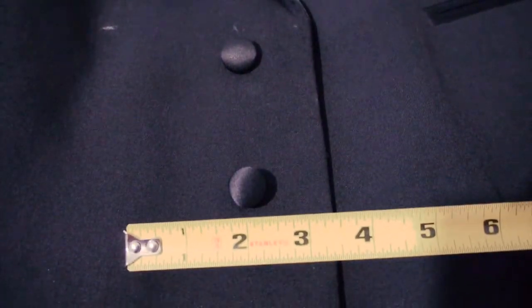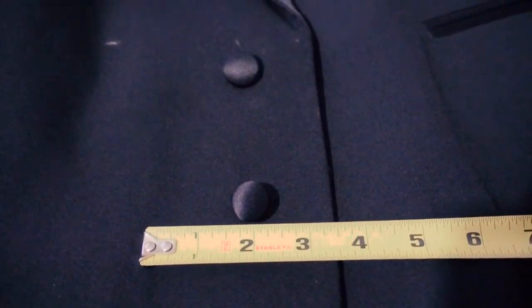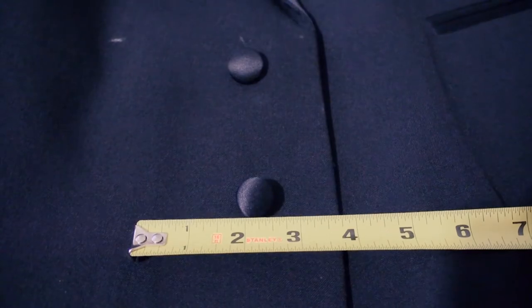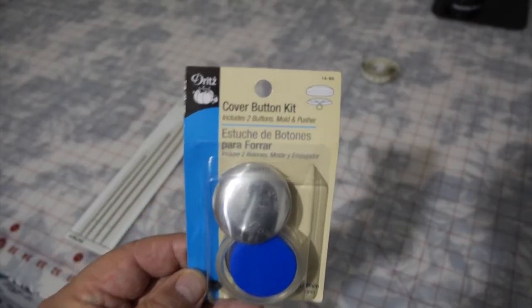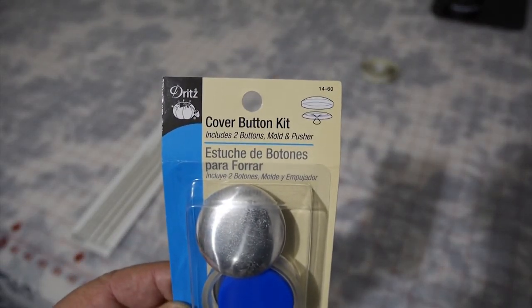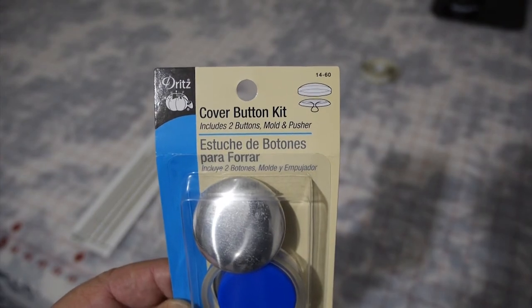All right. Well, one of the first things you want to do is determine the diameter of your button. These button kits come in various sizes. I found these at Joanne's Fabrics. They weren't really that much. In this box, you can make two buttons.